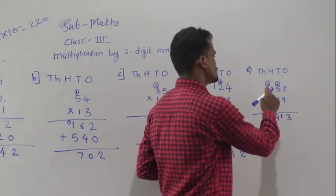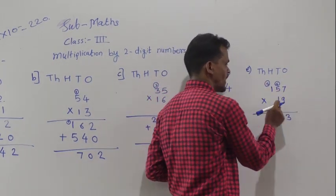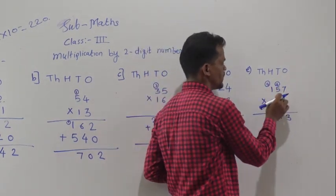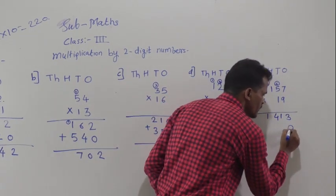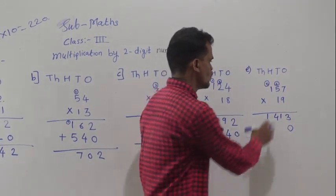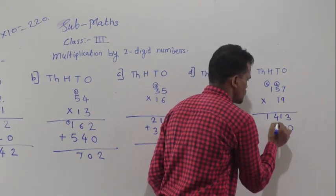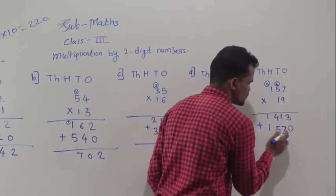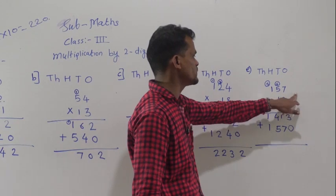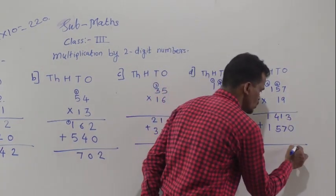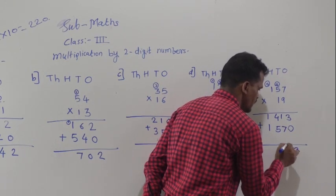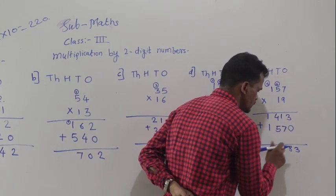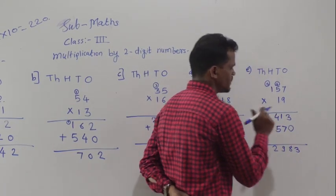Next step: multiply 127 by 1, but before multiplying, write 0 at the ones place. 1 seven is 7, 1 five is 5, and 1 one is 1. Now add the 2 numbers to get the product: 3 plus 0 is 3, 1 plus 7 is 8, 4 plus 5 is 9, and 1 plus 1 is 2. So 2983 is the product.